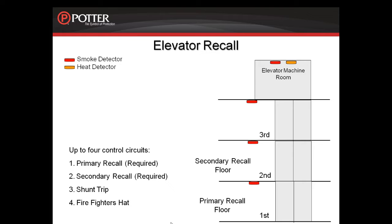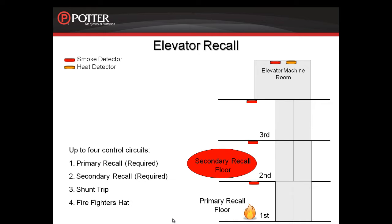In the event that there is a smoke detector active that is on the second, third, or any floor above that, we want to activate the primary recall relay, which will tell the elevator controller to recall the elevators to the primary floor of egress, which is in this case the first floor. In the event that there is an incident on the first floor, which is our primary recall floor, we need to recall the elevators to the secondary recall floor, which in this case is the second floor. So when the smoke detector on the first floor activates, we activate the secondary recall relay.